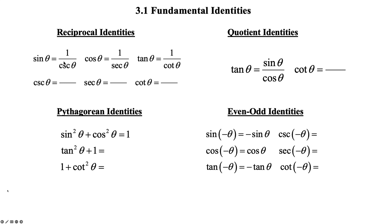Then we take the reciprocals of those: cosecant theta will be 1 over sine theta, secant theta will be 1 over cosine theta, and cotangent theta will equal 1 over tangent theta. So if you remember the first three, you just interchange the two trig functions.